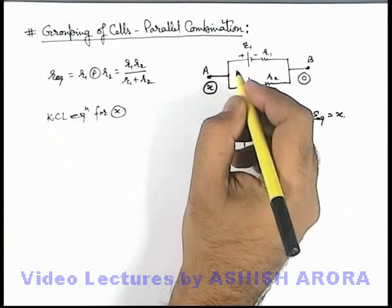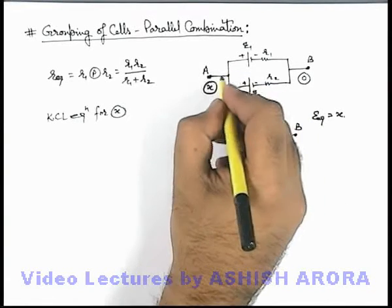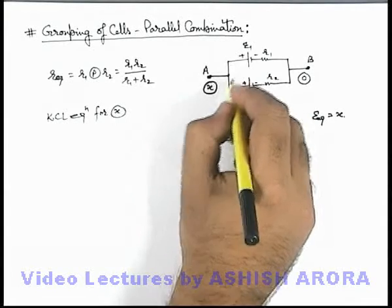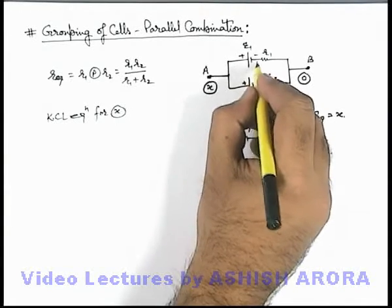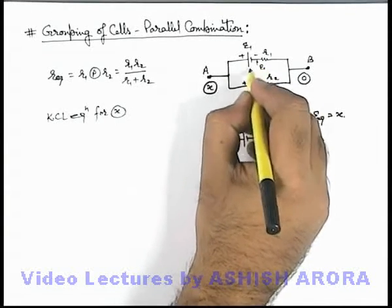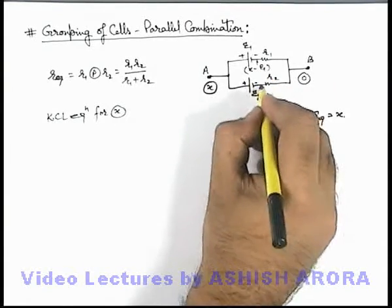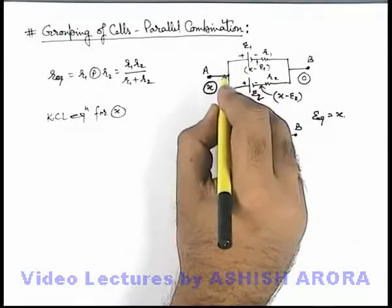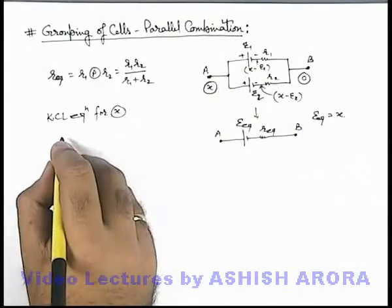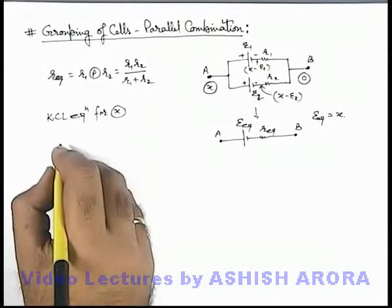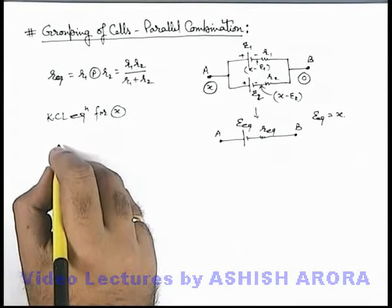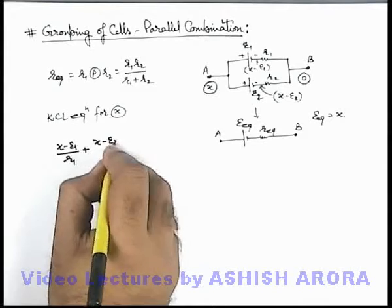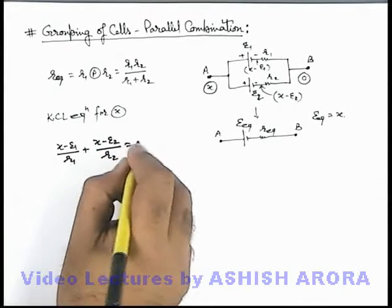As in this junction we are talking about open circuit, so no current will be flowing through the terminal A. But there are two currents going in this direction where we can say here potential will be x minus e1, and at this terminal potential will be x minus e2. So for these two branches we can write the total outgoing currents in the direction away from the junction will be (x-e1)/r1 plus (x-e2)/r2 should be equal to zero.